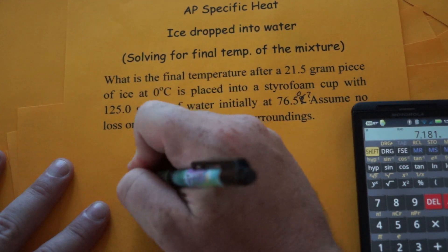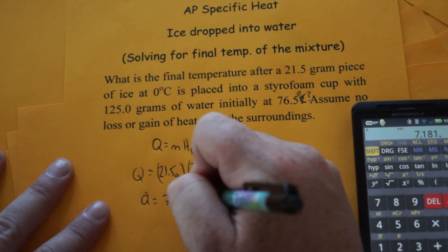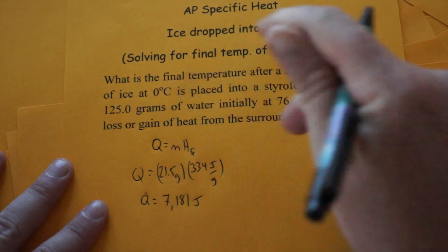So let's just say this would be for all the ice to melt we need 7,181 joules of energy.